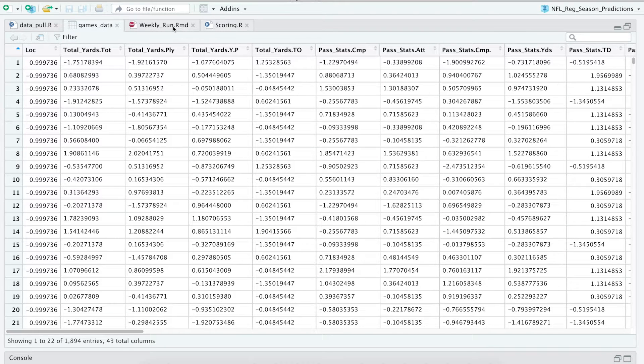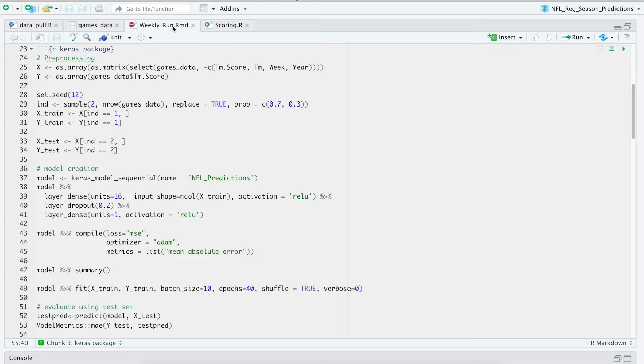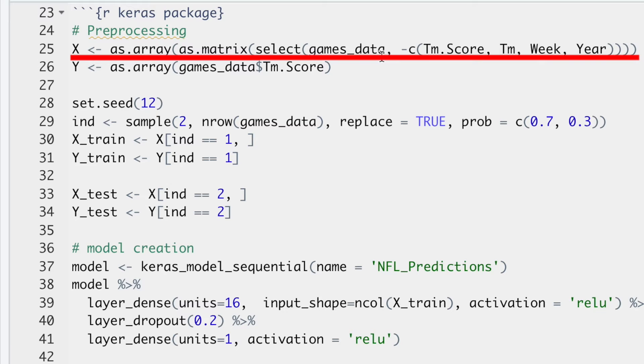So we already have our data frame that's games data right here that we already created. So the first thing we're going to do is separate the labels from the data. X is all of our game statistics while Y is TM.score which is our dependent variable. Then we're going to split our data into training and testing sets by randomly selecting 70% for the training and 30% for the testing. You can also do an 80-20 split if you want more data for the model to learn from.